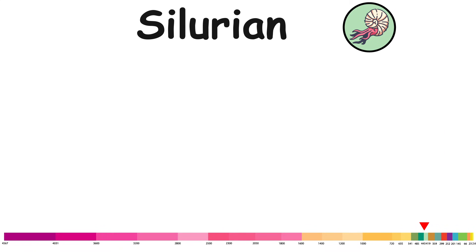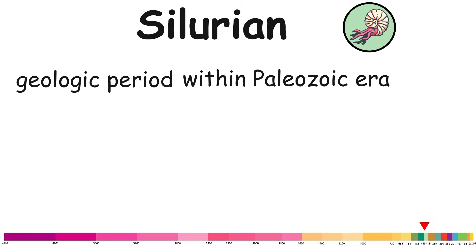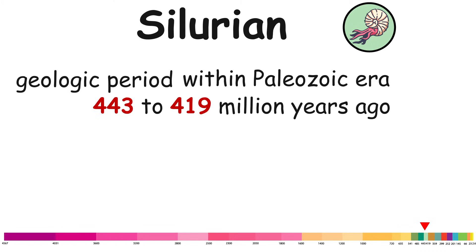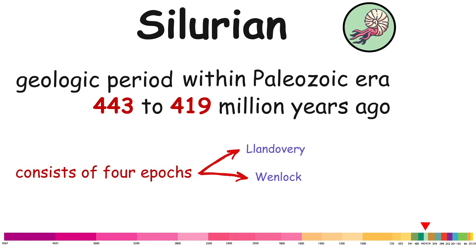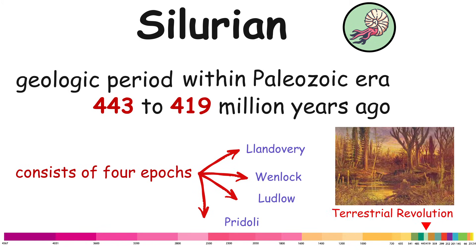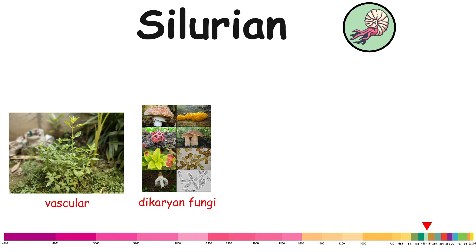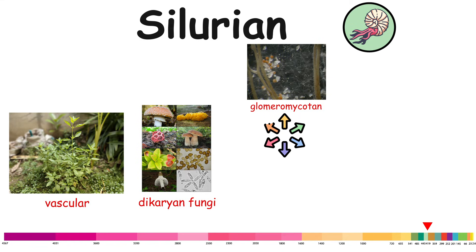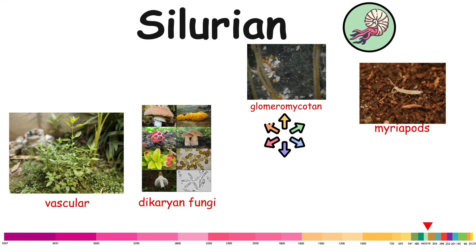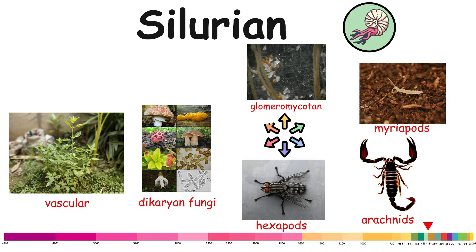Silurian. The Silurian is a geologic period within the Paleozoic era, spanning approximately from 443 to 419 million years ago. It consists of four epochs: Llandovery, Wenlock, Ludlow, and Pridoli. One important event was the initial establishment of terrestrial life, known as the Silurian-Devonian Terrestrial Revolution. Vascular plants emerged from more primitive land plants, Dikaryan fungi started expanding and diversifying along with Glomeromycotan fungi, and three groups of arthropods — myriapods, arachnids, and hexapods — became fully terrestrialized.